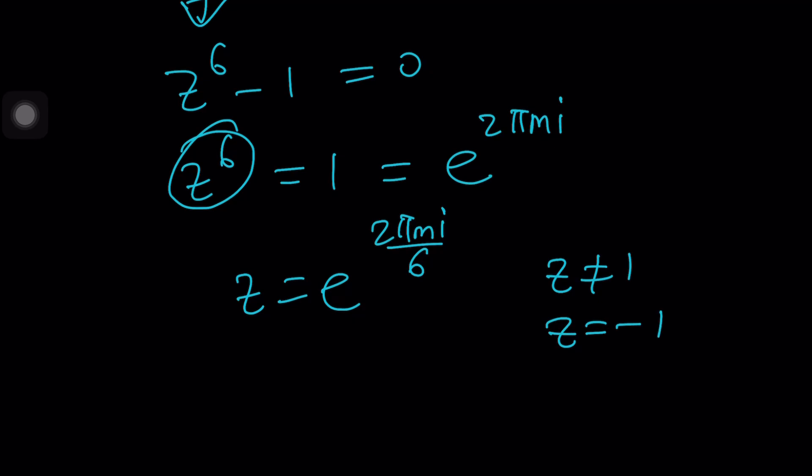You have to exclude one and negative one. And obviously, one and negative one are among the six roots of unity because if you raise negative one to the sixth power and one to the sixth power, you get one. And this brings us to the end of this video.